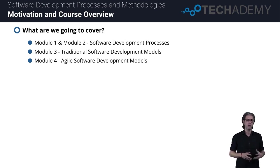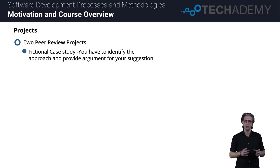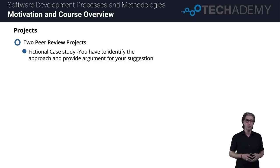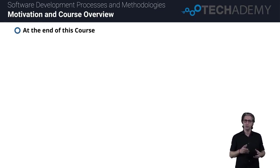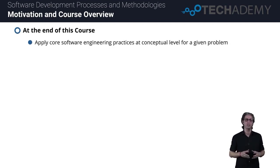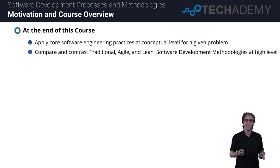In addition to quizzes, we will also do two peer review projects where we will use a fictional case study, and we will need to identify software development models that we would recommend using and why. At the end of the course, we should be able to apply core software engineering principles for any given problem at a conceptual level, and compare and contrast traditional, agile, and lean software development methodologies.